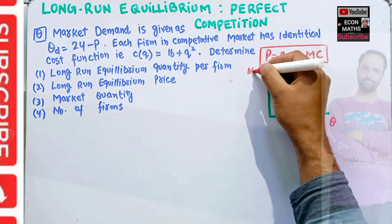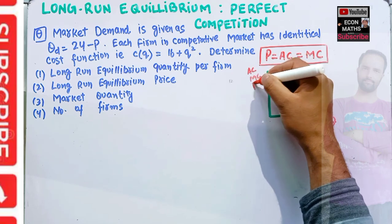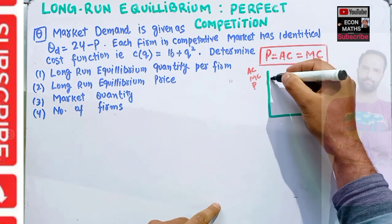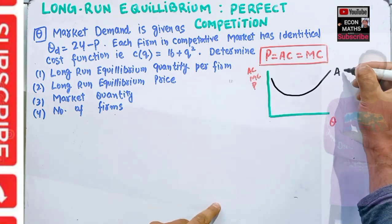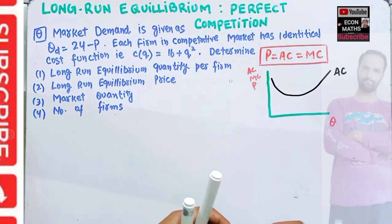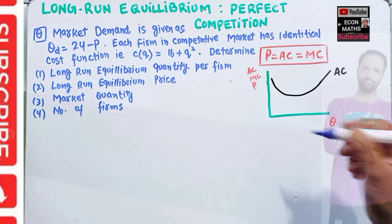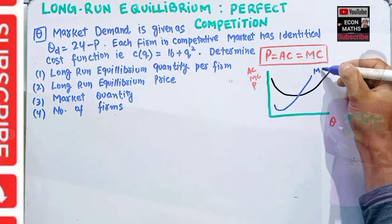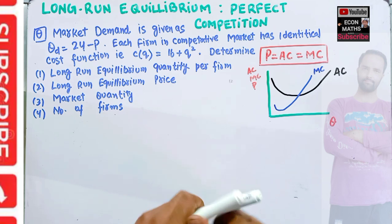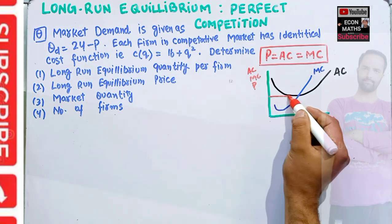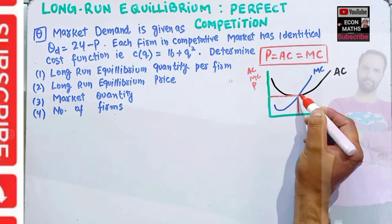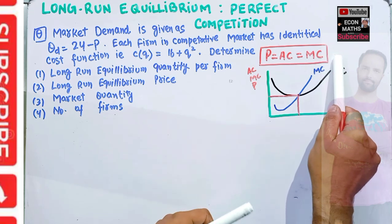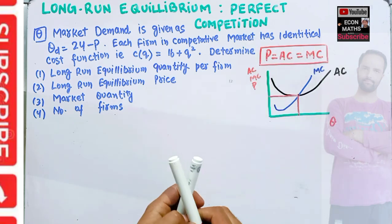We have our average total cost curve and our marginal cost curve. In the long-run, equilibrium is attained where average cost equals marginal cost, which in turn equals the price. This point is the long-run equilibrium where each firm has zero economic profit.